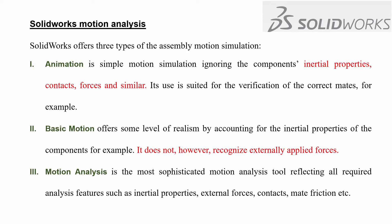SOLIDWORKS provides us with three options for motion analysis. The first one is animation — a simple motion simulation. We ignore the inertial properties, contact forces and similar quantities. This is used for verification of correct mate types or kinematic relationships.